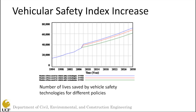The next policy was the Vehicular Safety Index increase. Our scenario focused on decreasing road accidents and the number of fatalities and injuries by increasing the safety index of vehicles. Two scenarios were tested: a 10% increase and a 15% increase in the safety index. This showed that yes, it will affect some decrease, but by itself it is not enough.